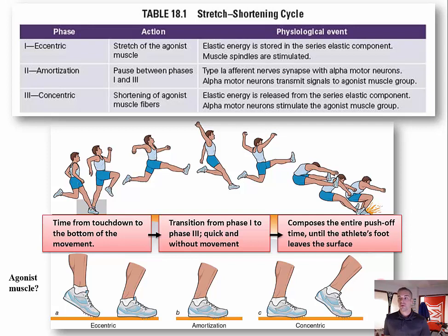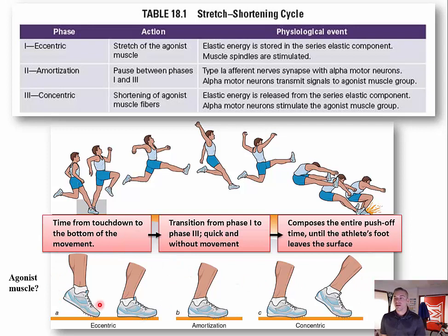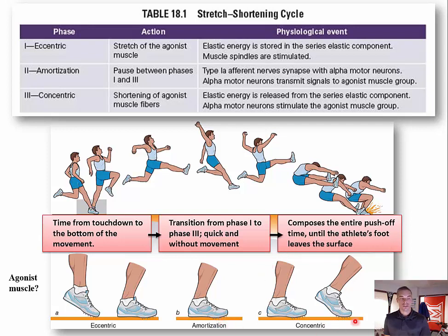In this long jump example, one of the agonist muscles is the gastrocnemius within the calf. Upon touchdown, the gastrocnemius undergoes a rapid stretch during the eccentric phase. There is a brief delay in movement — the amortization phase. Finally, the muscle concentrically plantar flexes the ankle, allowing the athlete to push off the ground — this is the concentric phase.